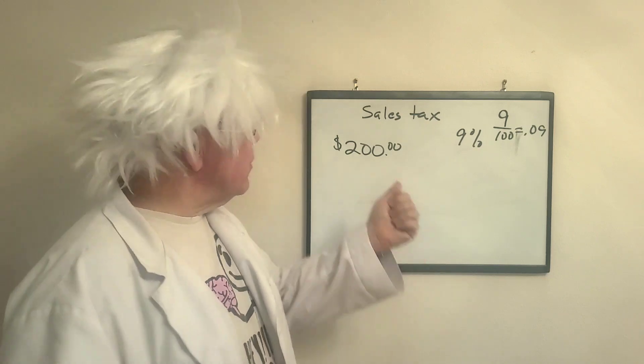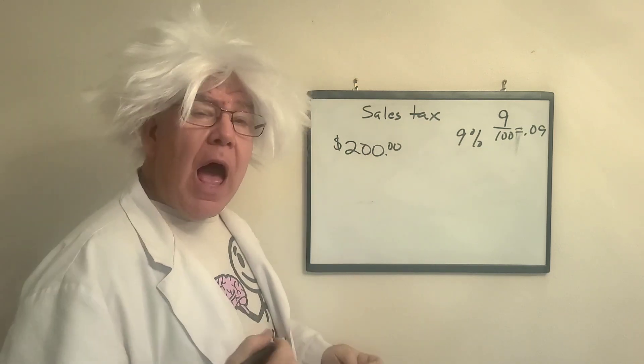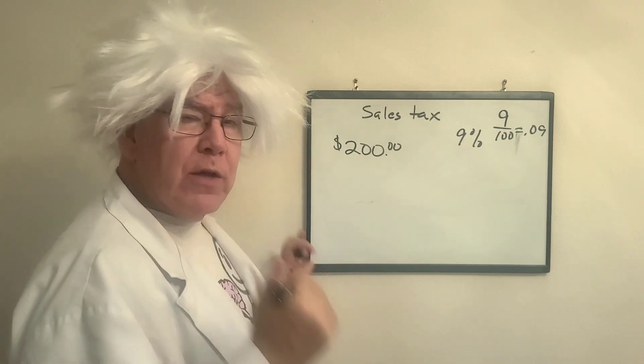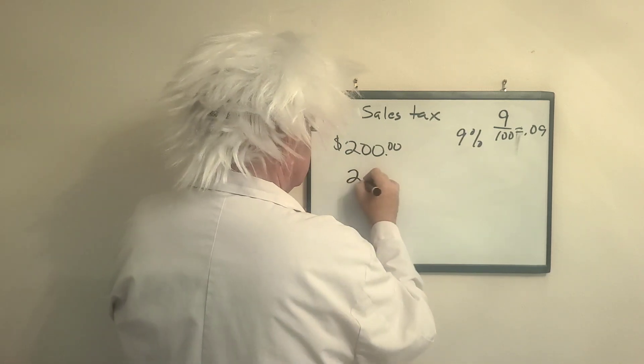Now, that's the part. So if I was to apply this to this, I would get just the tax. I want the total amount. So watch what Professor Algebra does. This is 200.